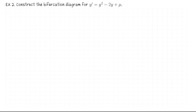Let's take a look at the next example. We'd like to construct the bifurcation diagram for y prime equals y squared minus 2y plus mu. In the previous example, we just grabbed a few values of mu and saw how the phase lines looked. This time we're going to do it more wisely — regardless of the value of mu, let's see if we can come up with an explicit form for the equilibrium solutions.